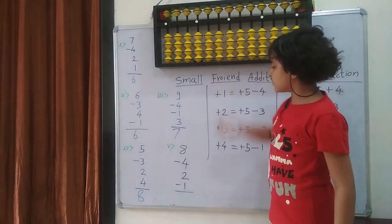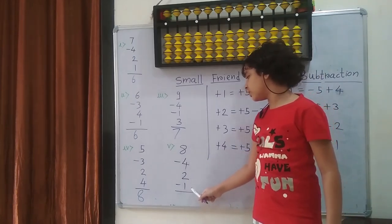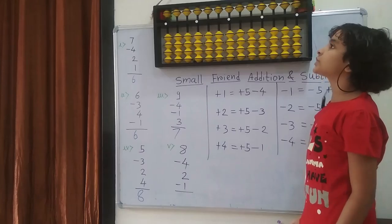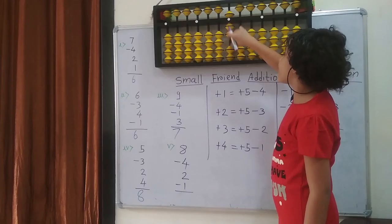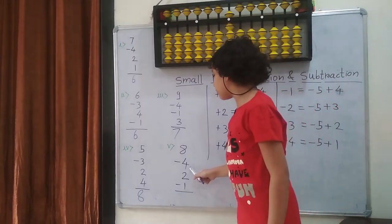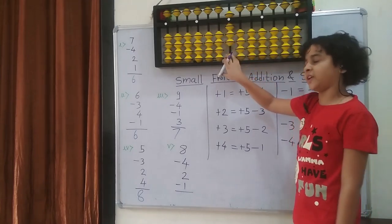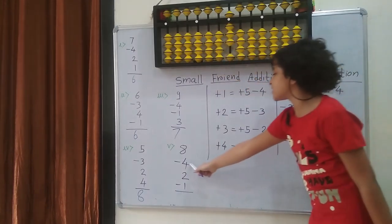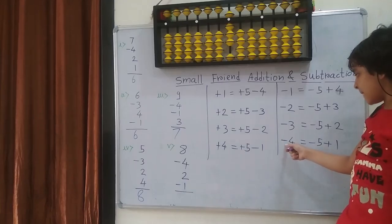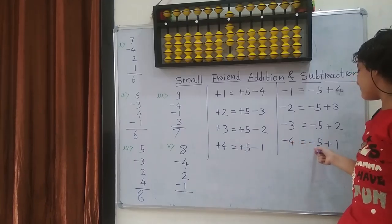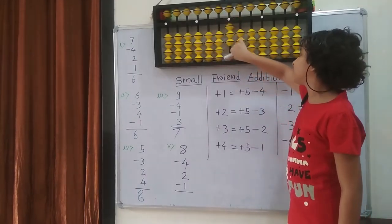Next question: 8 minus 4 plus 2 minus 1. So first on the backwards, I am going to put 8 — 5, 6, 7, 8. Then I am going to minus 4. So we cannot, because we don't have enough bits — this is subtraction, and I am going to use the subtraction formula. Which is: minus 4 equals to minus the 5 plus the 1. So minus the 5 and plus the 1.